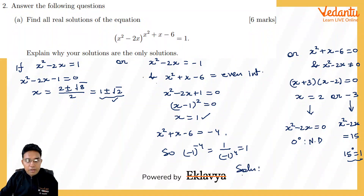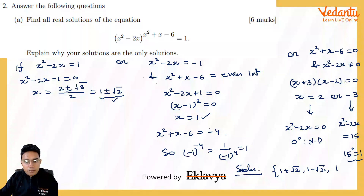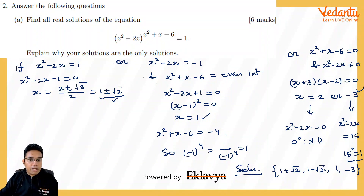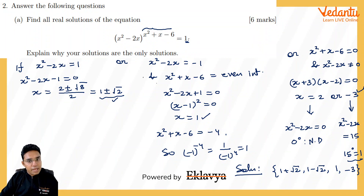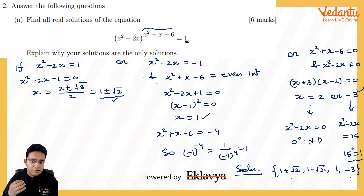The complete solution set is {1+√2, 1-√2, 1, -3} — four solutions in total. To recap: this expression equals 1 only when the power is 0 with a non-zero base, or when the base is 1 (power can be anything), or when the base is -1 and the power is an even integer. Using all three scenarios, these are the only four possible answers.